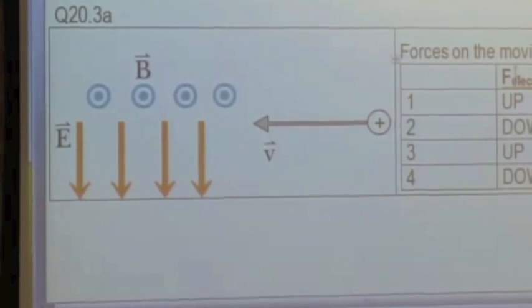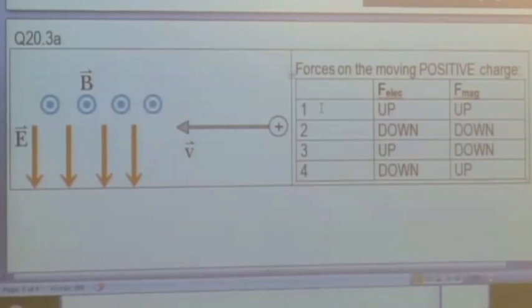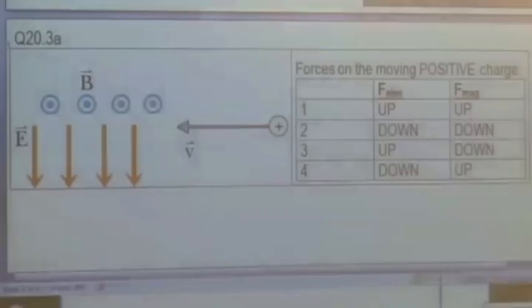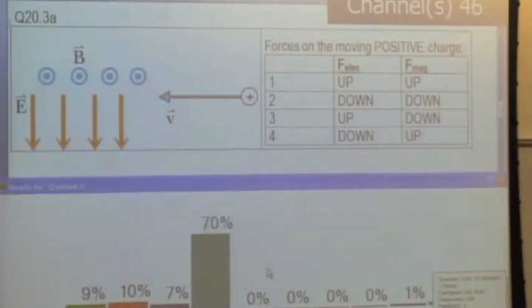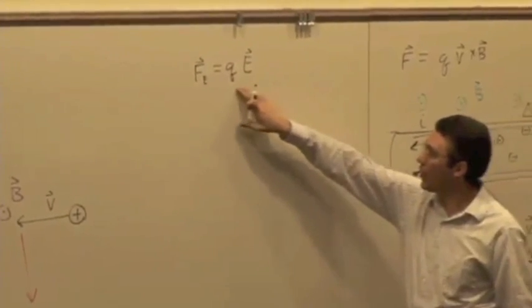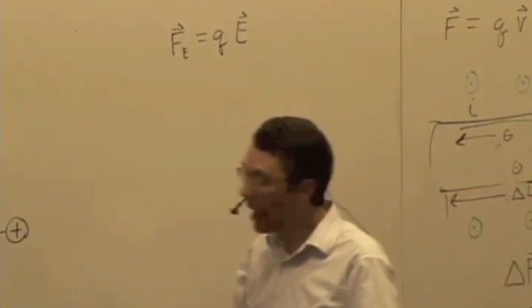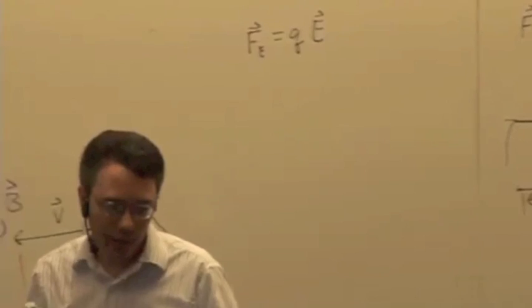Here's a little table. Think about the direction of the electric force and the magnetic force on this charge. Most of us are saying that on a positive charge we have the electric force pointing down. That comes from the electric force being equal to Q times E. If the electric field is pointing downward and the charge is positive, you multiply positive by the electric field and get a vector in the same direction as the field. So the electric force is pointing downward.